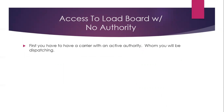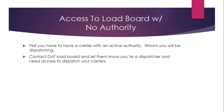The first thing you have to do to get access to the load boards without your own authority is have a carrier with an active authority whom you will be dispatching. If you've already taken your dispatcher course, whether from us or someone else, you now have to go out and market for your client. Once you do have a client, you go to the next step and contact the DAT load board, letting them know you're a dispatcher who needs access to dispatch your carriers.